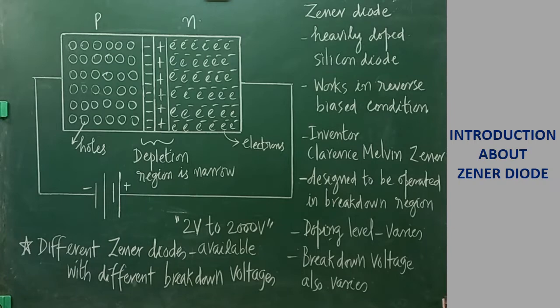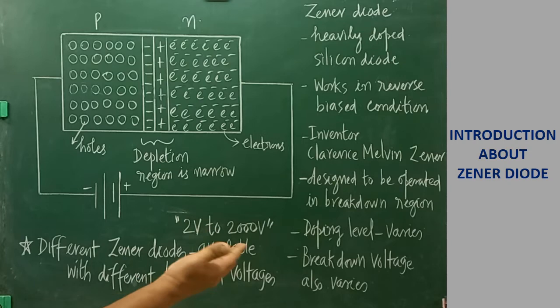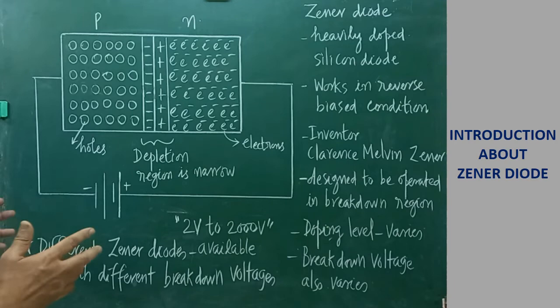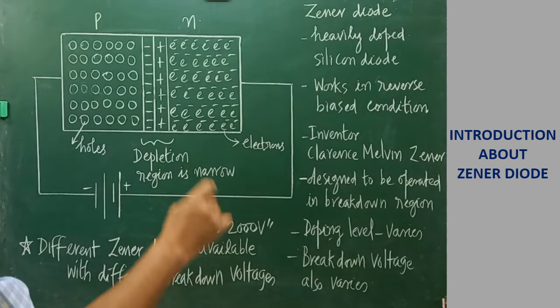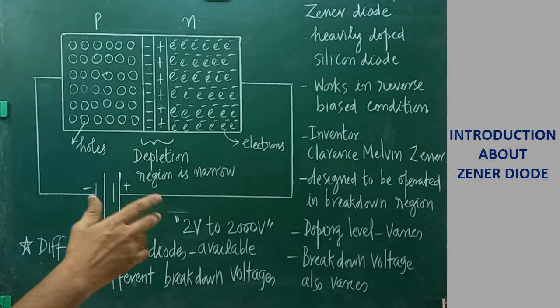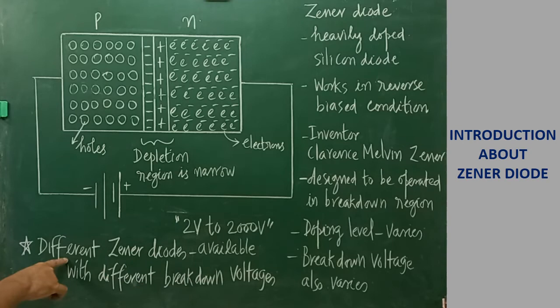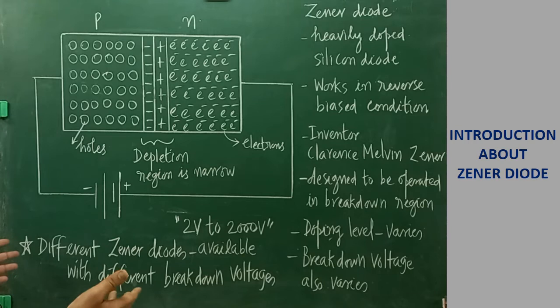Depending on the doping level — the addition of impurity — the breakdown voltage varies from Zener diode to Zener diode. While buying a Zener diode in the market from an electronic shop, you have to specify the breakdown voltage of the particular Zener diode. Different Zener diodes are available with different breakdown voltages. The range of breakdown voltage starts from 2 volt to 2000 volt.